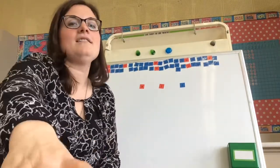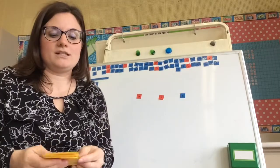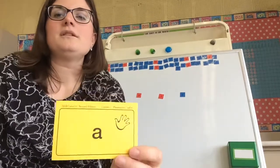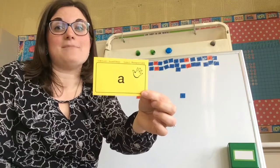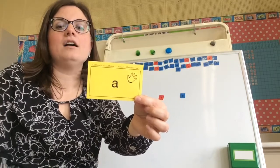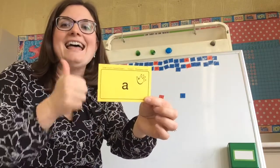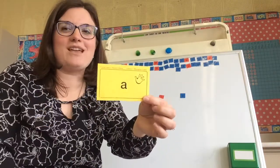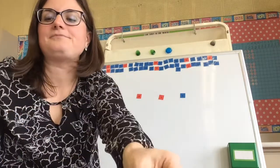Now for today, we have some new sounds that we are going to learn. So A can say ah, but it can also say its name, a, and it can say ah. So it can say ah, a, ah, do that with me. Ah, a, ah. Perfect.